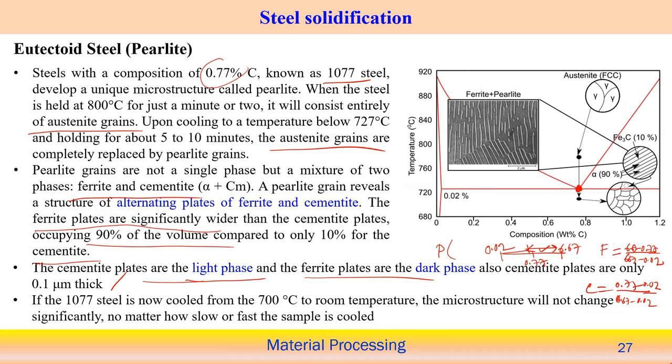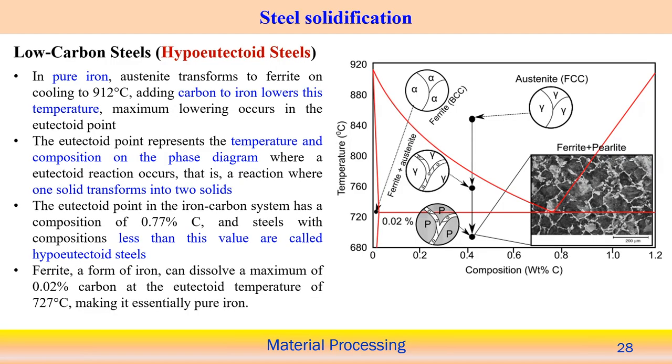If the 1077 steel is further cooled from 700°C to room temperature, the microstructure does not change because it is already converted to the stable pearlite structure. Regardless of whether slow or fast cooling is followed at this stage, the stable structure is very difficult to transform into another microstructure.